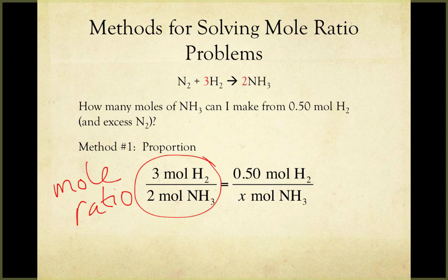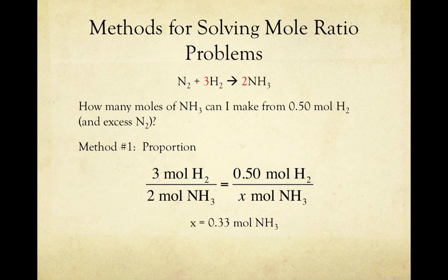On the right-hand side of the equation, I put what we're given in the problem, 0.5 moles of H2 over x moles of NH3. In other words, I'm saying that if 3 moles of H2 gives me 2 moles of NH3, then 0.5 moles of H2 should give me x moles of NH3. Solving for x, I find that I should get 0.33 moles of NH3.